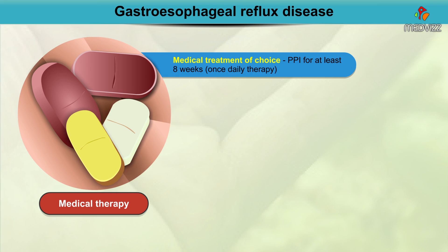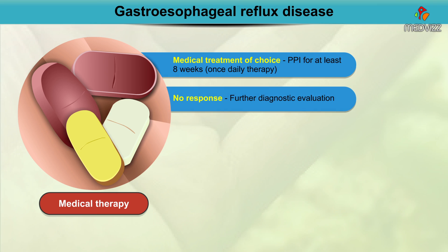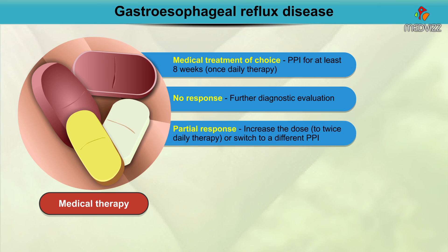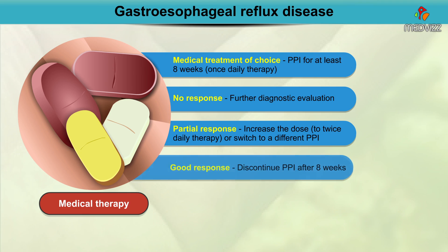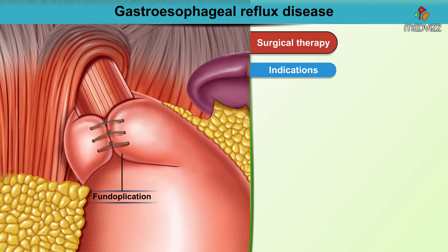The medical treatment of choice is proton pump inhibitors for at least eight weeks as once-daily therapy. In patients with no response, further diagnostic evaluation should be pursued, or if there is already a high degree of suspicion for GERD, once-daily therapy can be converted to twice-daily therapy or the PPI can be changed. With partial response, increase the dose to twice daily or switch to a different PPI. With good response, discontinue the PPI after eight weeks of therapy.